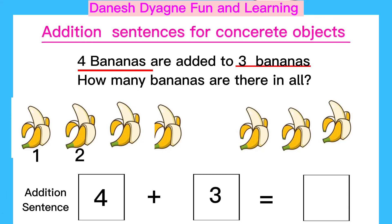Now kids, let's count all together. One, two, three, four, five, six, seven. The answer is seven. So the addition sentence is four plus three equals seven.